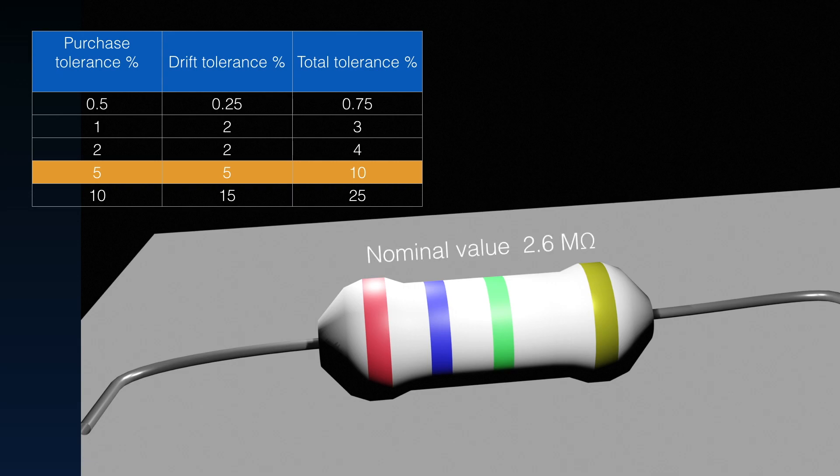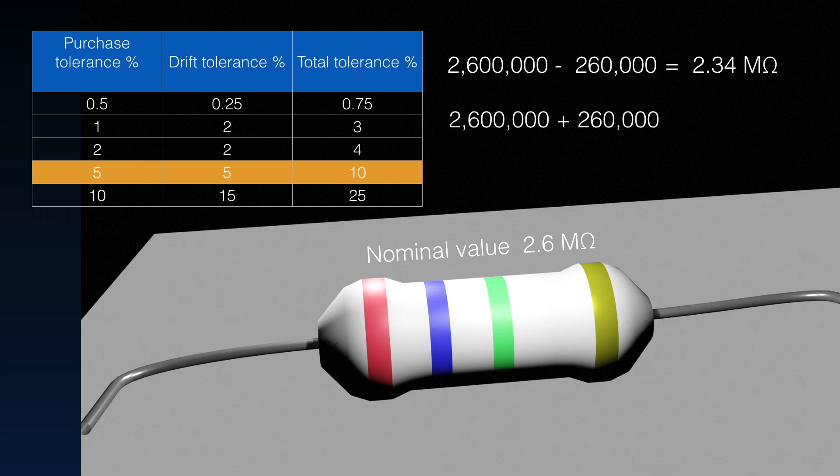With this resistor that we have, the nominal value was 2.6 mega-ohms, that's 2,600,000 ohms. We could take 10% off that, and the minimum value that we might expect might be 2.34 mega-ohms. Similarly, if we add 260,000 ohms to it, or 10%, it could be 2.86 mega-ohms. So, here, what we're saying is that, although the nominal value is 2.6 mega-ohms, we could reasonably expect any values between 2.34 and 2.86 mega-ohms. Quite a spread.